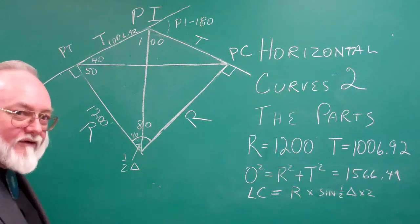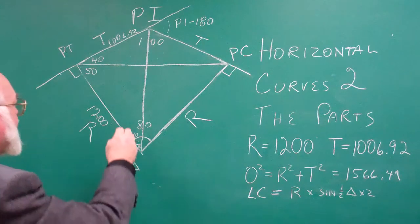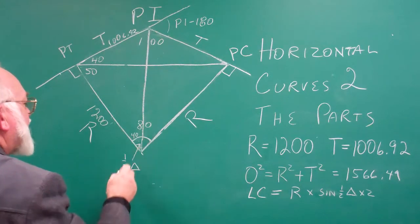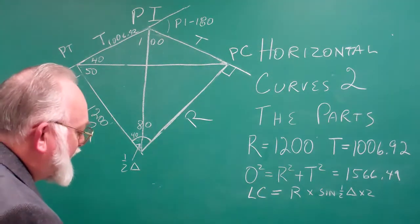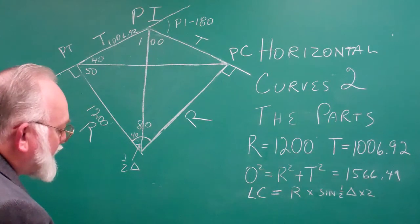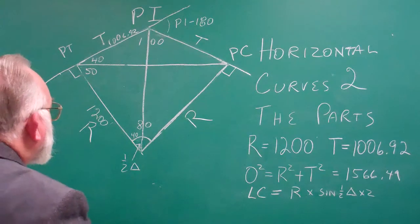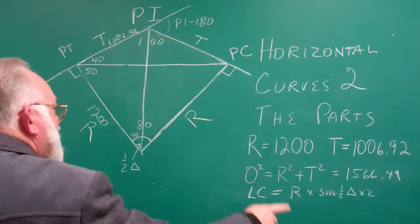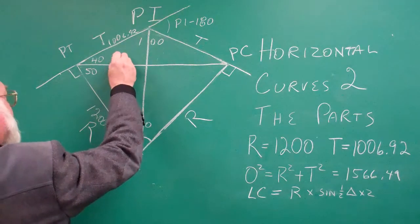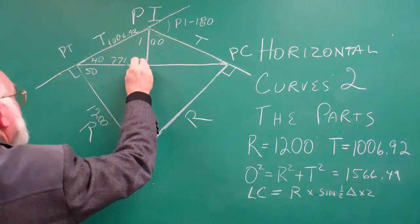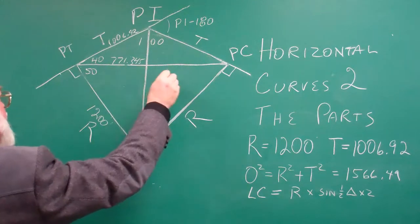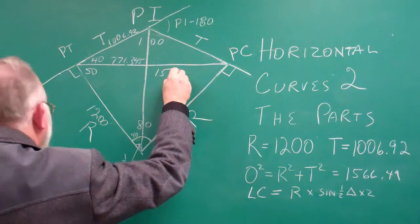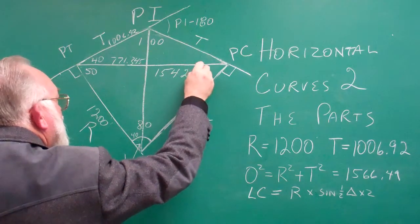What does Oscar tell you? Oscar tells you that the opposite over the hypotenuse gives you the sine. We know the value of this, so therefore this number here, radius times the sine of one-half delta times 2, gives you 771.345. Multiply that by 2 and you get that distance, which is 1542.69.